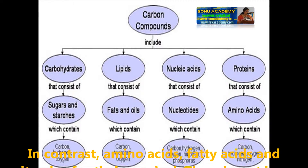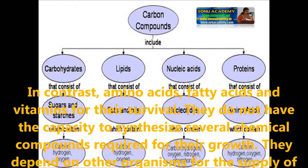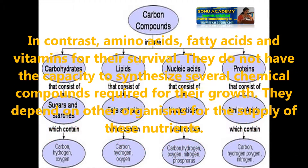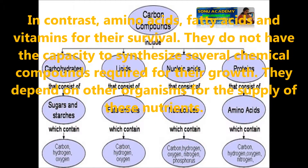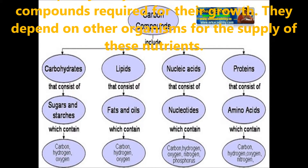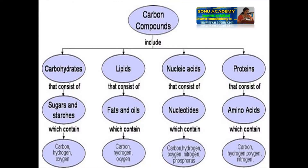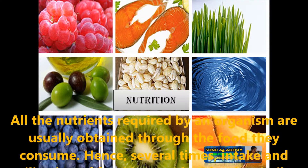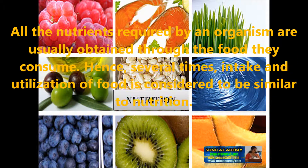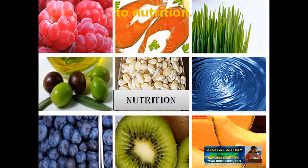In contrast, animals require complex organic molecules such as carbohydrates, amino acids, fatty acids, and vitamins for their survival. They do not have the capacity to synthesize several chemical compounds required for their growth and they depend on other organisms for the supply of these nutrients. All nutrients required by an organism are usually obtained through the food they consume. Hence, intake and utilization of food is often considered similar to nutrition.